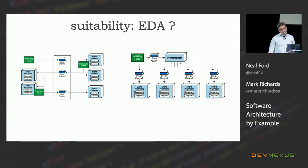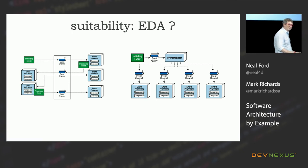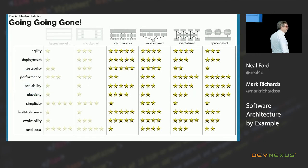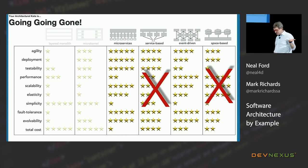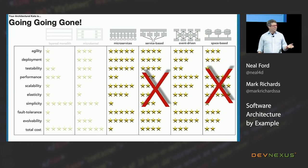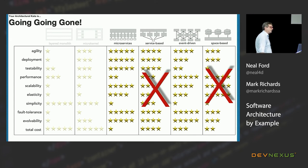So what's the suitability of event-driven architecture for Going Going Gone? We'll knock out service-based right away — it doesn't really have the set of characteristics we want. Space-based is very esoteric and complex, gets rid of the database, handles 10,000 new concurrent users at once — slick, but we don't need that level, and we have transactional stuff which kind of knocks space-based out. So we're left with microservices and event-driven.